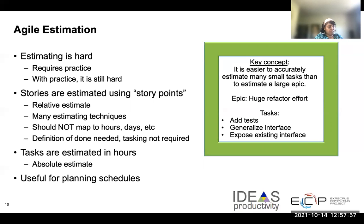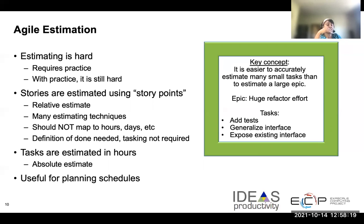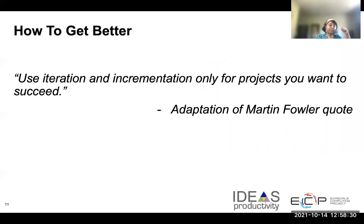Scrum, for example, heavily uses estimation and it allows a team to relatively accurately predict when upcoming stories might be completed. When it comes to estimation, try to keep things simple. It's a lot easier to estimate if you break down a large epic into smaller stories and smaller tasks. It's easy to miss stuff if you don't break down. And it's quite possible to underestimate the cost of adding tests or even running them.